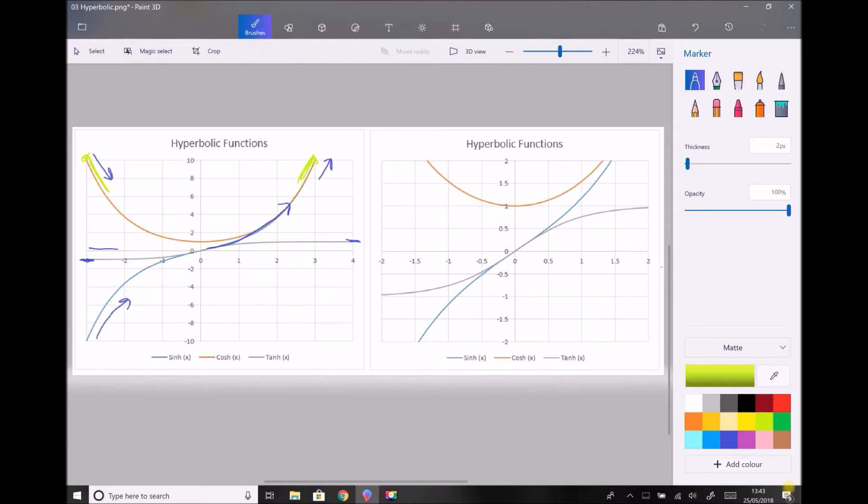On the right-hand side of the screen, I've reduced the scale slightly just so we can highlight a couple of points. First of all, the hyperbolic cosine has a minimum value of one and increases from that point.